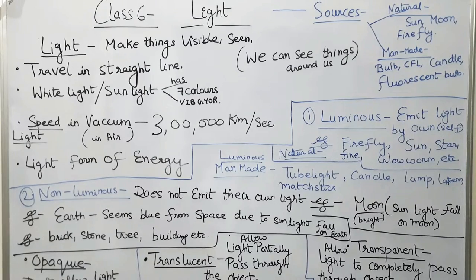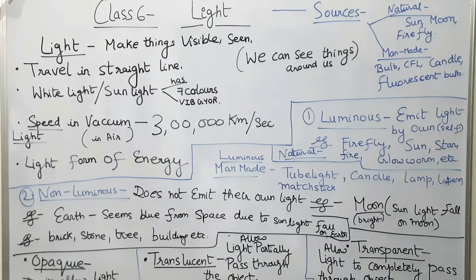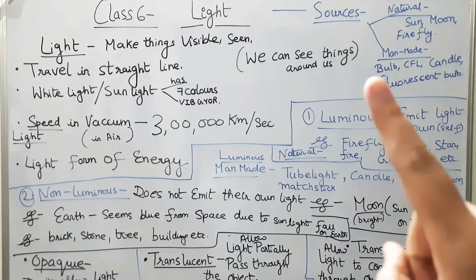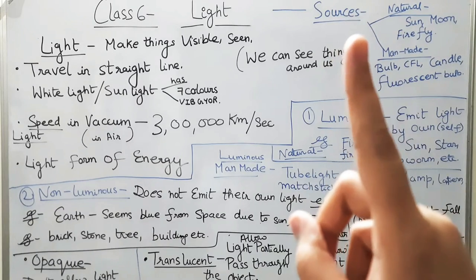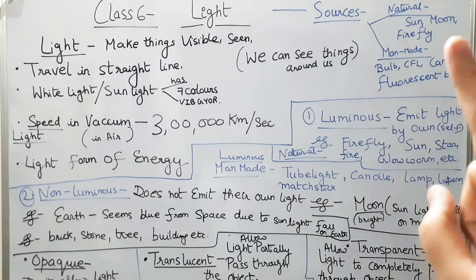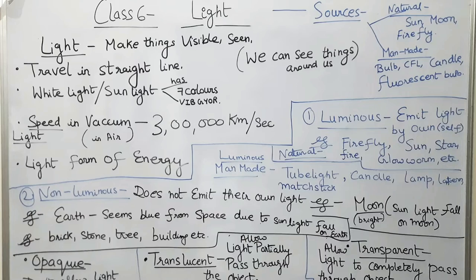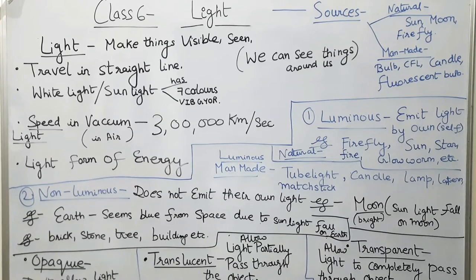There are sources of light which are natural and man-made. The natural sources consist of the sun, moon, and firefly. Man-made sources consist of bulbs, CFLs, candles, fluorescent bulbs, and other glowing objects.